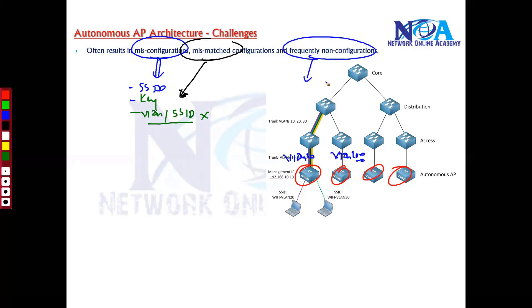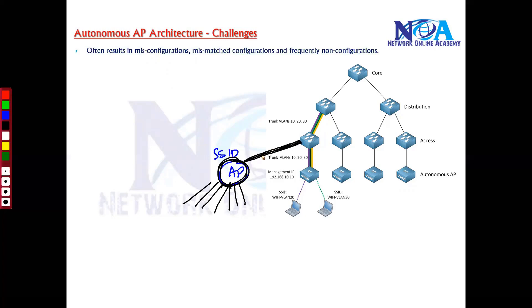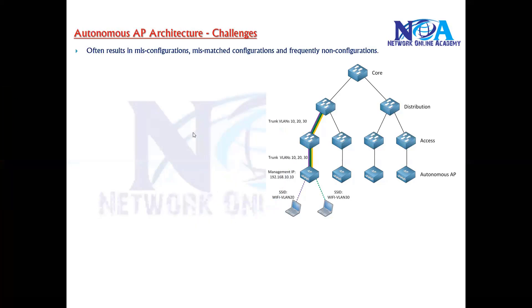There is also something called non-configuration, which occurs when you add a new access point. You may configure everything on the new access point and wireless users can connect to it, but if the new access point is not properly linked to the network via the trunk link or the SSID-to-VLAN mapping is not properly done, all wireless user traffic will drop at that point and not go any further due to those misconfigurations.